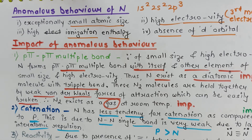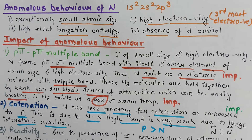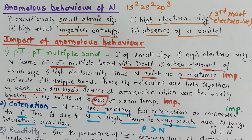In our last video we discussed that nitrogen, being an element of the second period, shows anomalous behavior: small atomic size, high electronegativity, high ionization enthalpy, and absence of d-orbitals. Nitrogen is also the third most electronegative element of the periodic table.